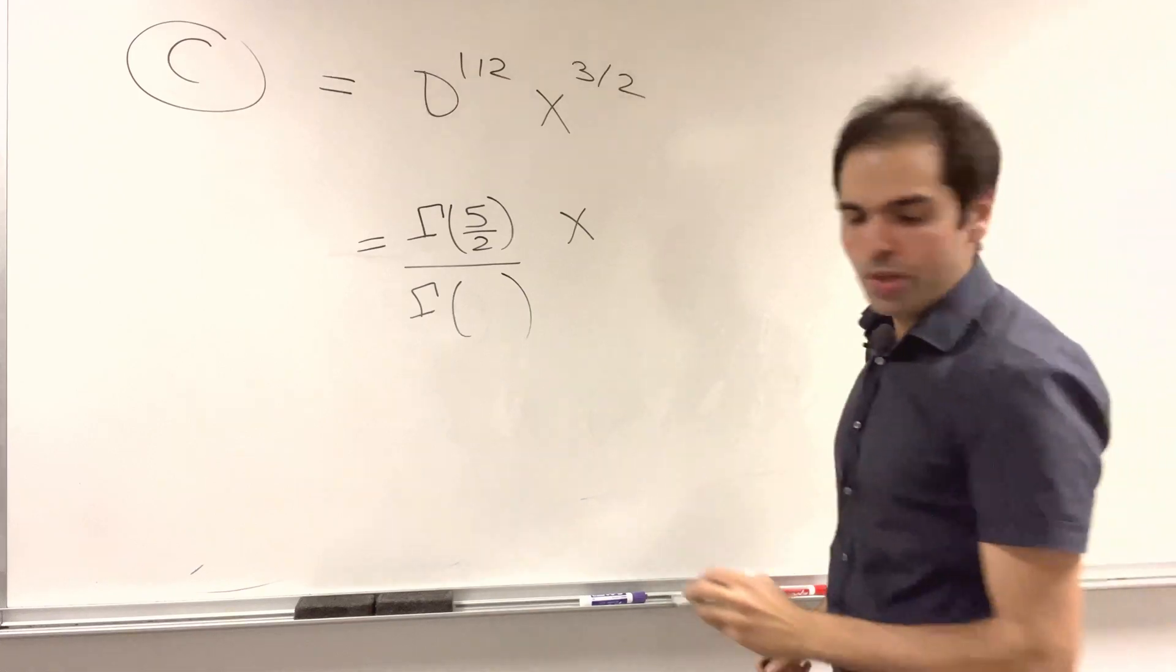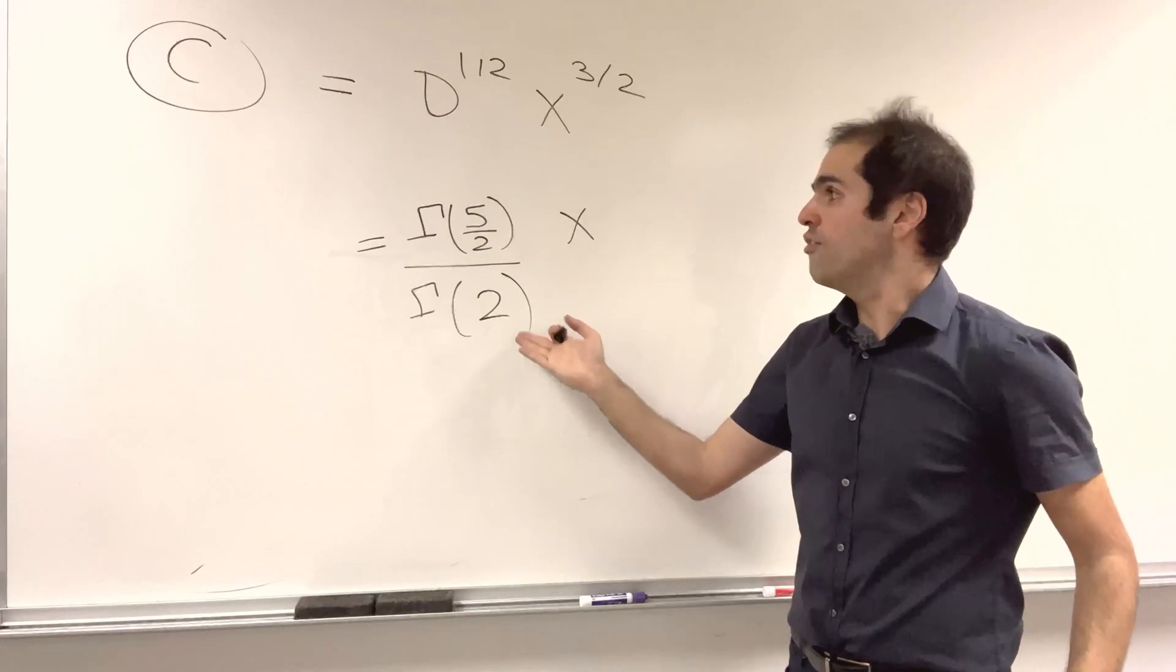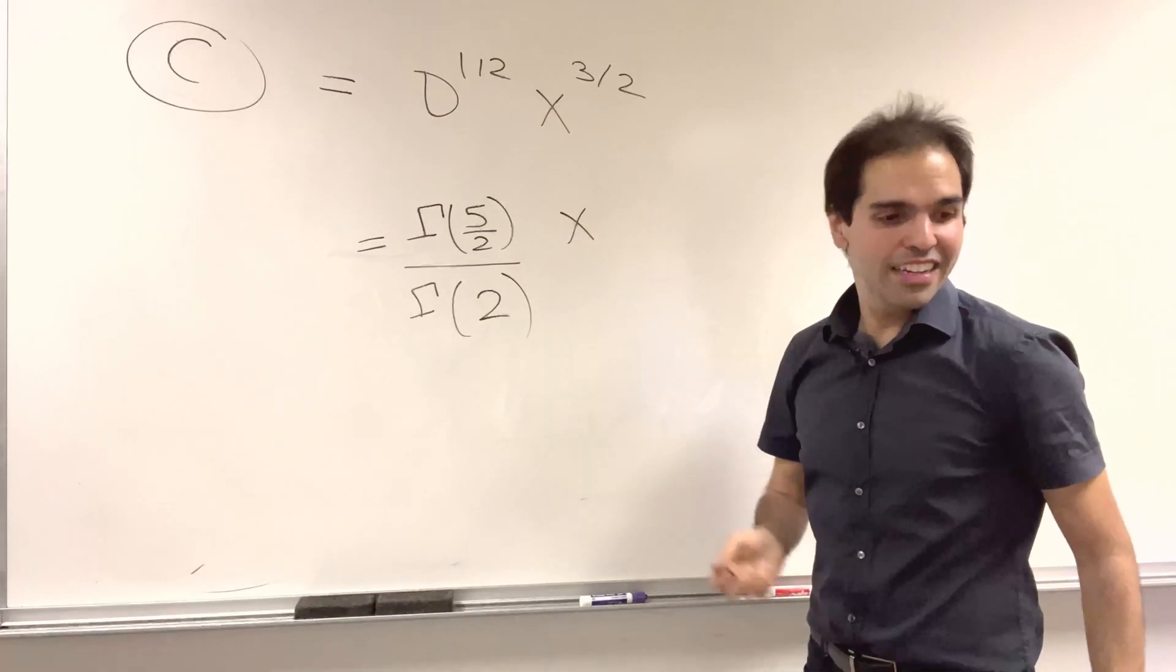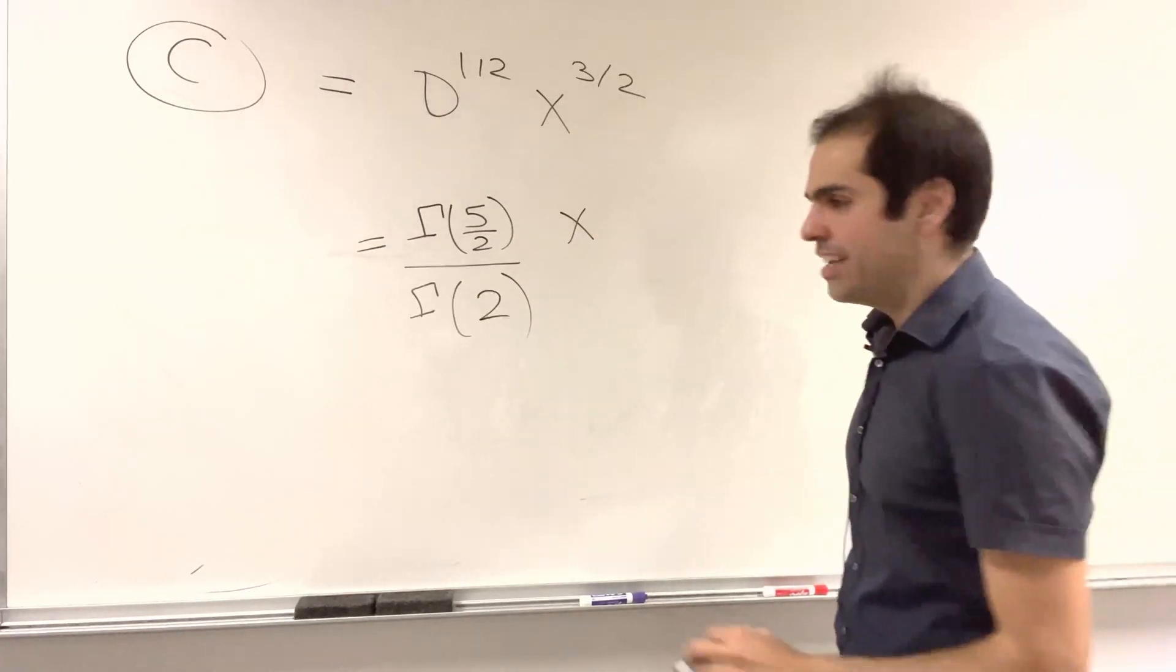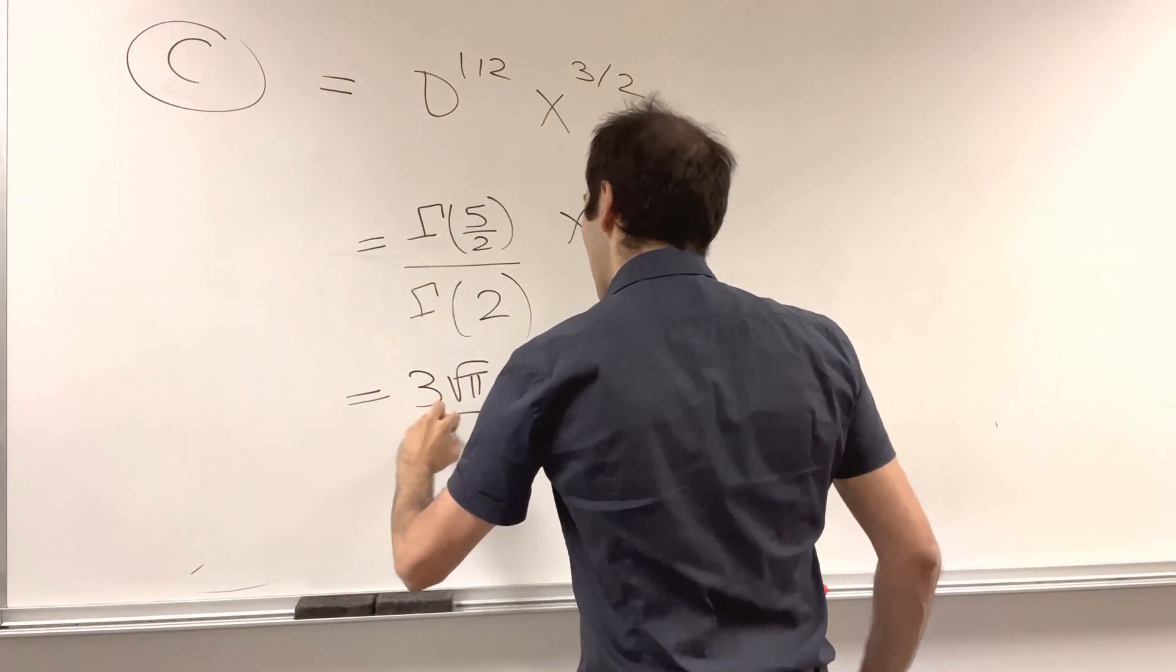And I think gamma of 2 is just 1 factorial, and we calculated gamma of 5/2. And in the end, we get 3√π over 4 x.